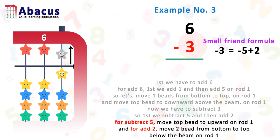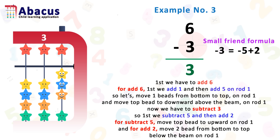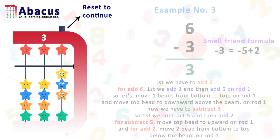So first we subtract 5 and then add 2. For subtract 5, move the top bead upward on rod 1 using the thumb. For add 2, move 2 beads from the bottom to the top below the beam on rod 1 using the thumb. We got the answer 3. Summary: for add 6 we added 1 and 5 on rod 1, and for subtract 3 we subtracted 5 and added 2 beads on rod 1.